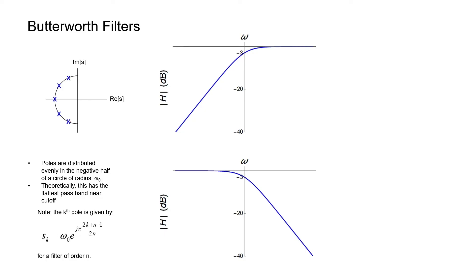If we have an nth order filter — that is, it has n poles — each of the poles will have a position given by S-sub-k. In the pole-zero plot up here, this would represent a 5-pole low-pass filter where n equals 5. K would then be an index that runs between 1 and 5. S-sub-1 would represent the position of pole k equals 1, S-sub-2 would represent the position of pole k equals 2, until we get to S-sub-5.